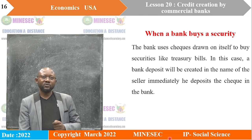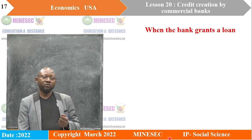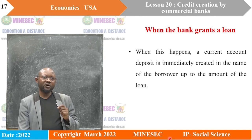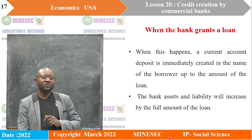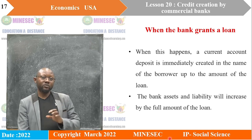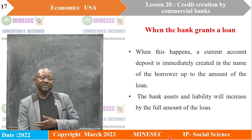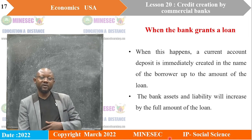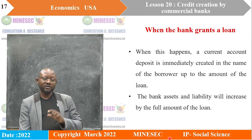The next way credit can be created is when a bank grants a loan. A current account deposit is immediately created in the name of the borrower up to the amount of the loan, and the bank's assets and liabilities will increase by the full amount of the loan. In this case, money is actually created. The loan represents advances as assets, and at the same time there is a claim on the bank — the customer will eventually take back his money — so it presents a liability. That is why both sides of the balance sheet increase by the full amount of the loan.